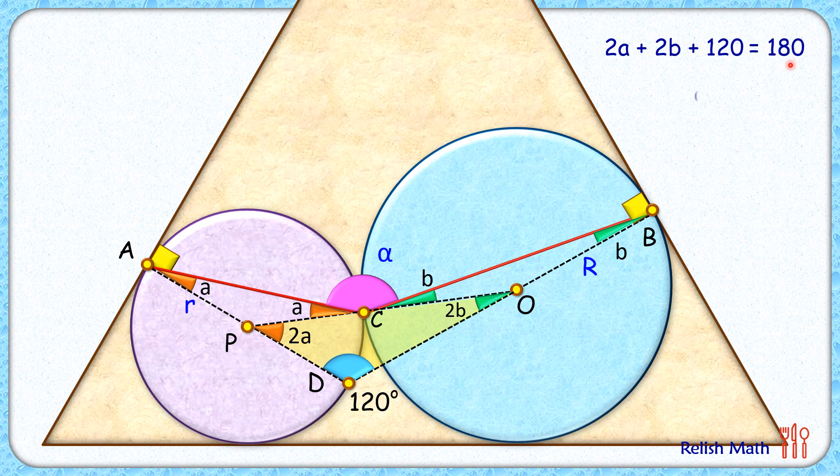Also if you'll observe, this PCO is a straight line, and thus angle A plus alpha plus B is 180. Putting A plus B as 30 degrees, we'll get angle alpha, that's the angle we had to find, is 150 degrees. And that's our answer.